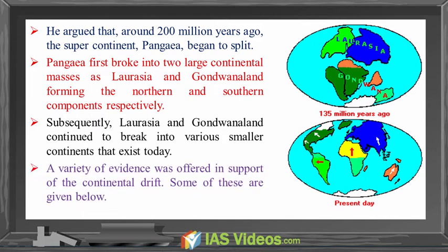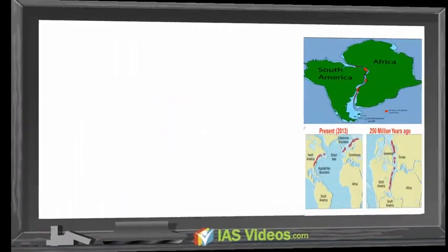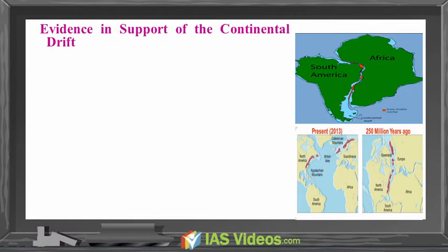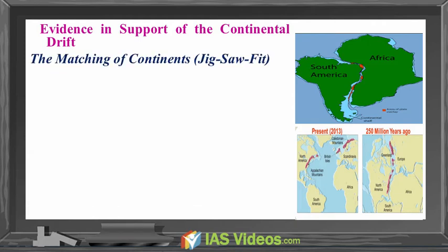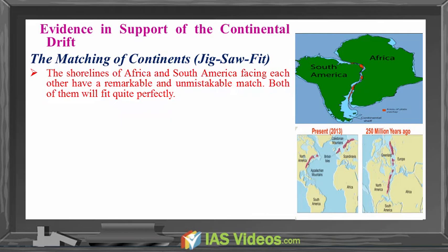Various evidence was offered in support of continental drift. Evidence in support of continental drift: The matching of continents. The shorelines of Africa and South America facing each other have a remarkable and unmistakable match — both of them will fit quite perfectly.